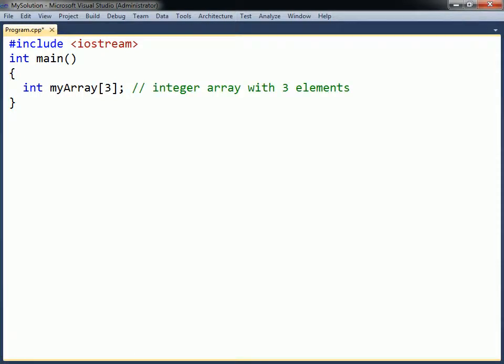The brackets contain the number of elements in the array. The default values for these elements are the same as for variables. Elements in global arrays are initialized to their default values, and elements in local arrays remain uninitialized.